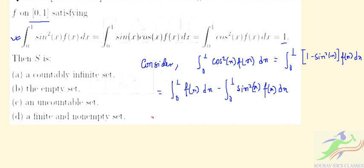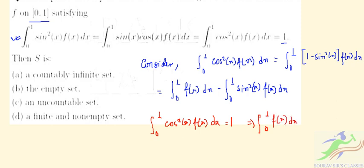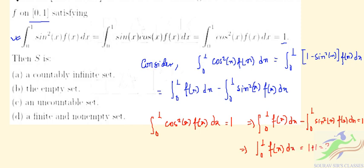Since ∫₀¹ cos²(x) f(x) dx = 1, we have ∫₀¹ f(x) dx minus ∫₀¹ sin²(x) f(x) dx = 1. From here we get ∫₀¹ f(x) dx = 1 + 1 = 2.